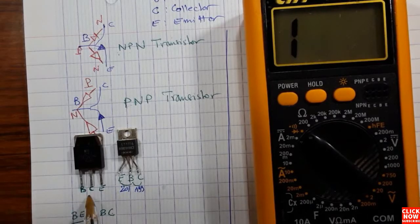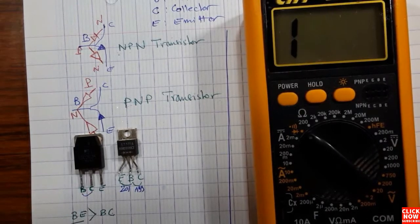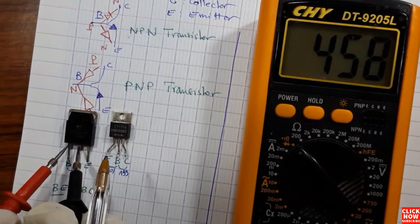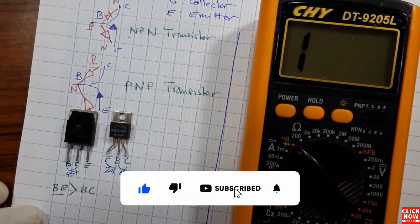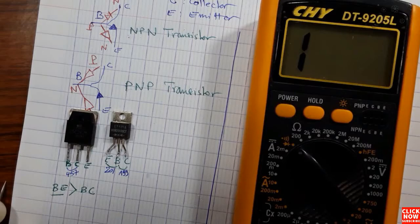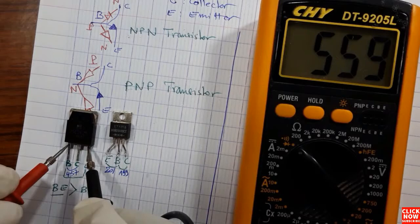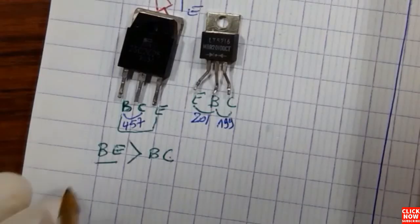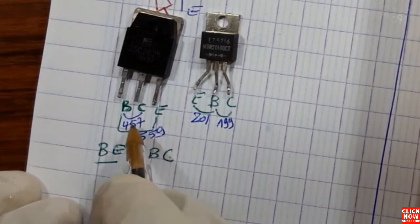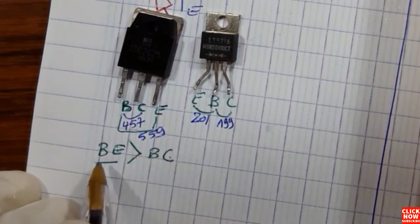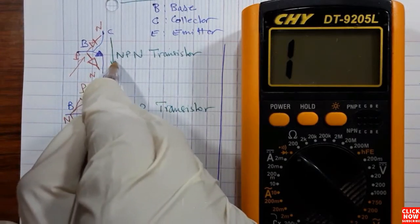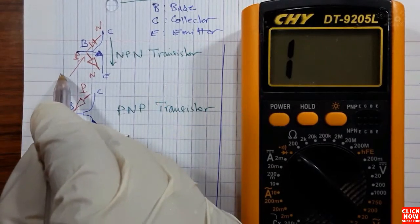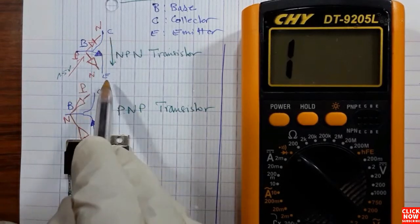Remember this rule — using it, you can identify the collector and emitter. The values between base and collector and base and emitter for this transistor are 457 and 559 respectively, confirming base-emitter is always greater than base-collector. Basically, when the transistor receives a voltage or control signal at its base, it will allow current to pass through between collector and emitter. The transistor is activated when it receives a control signal at its base.